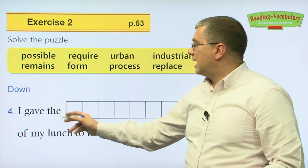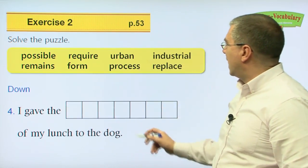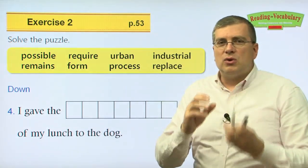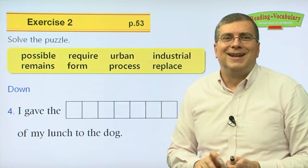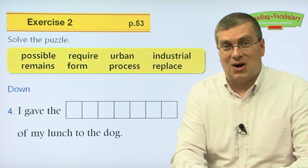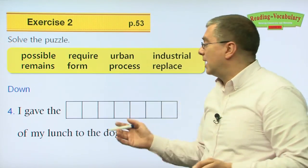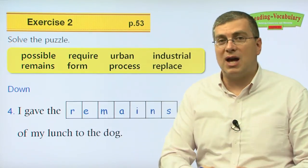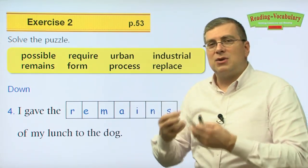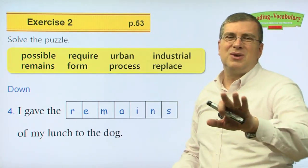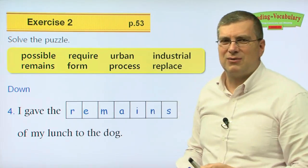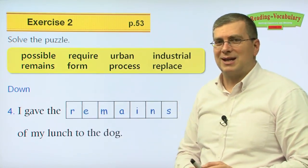Number four down: 'I gave the blank of my lunch to the dog.' Think about it — when you eat food and your dog looks at you, after you finish eating, maybe you don't eat everything, so you give what's left to your dog. What is left is the remains. You give the remains of your lunch — maybe a piece of bread, rice, or apple. So you give the remains of your lunch to your dog. But actually, don't do that, because your dog will beg you every time you eat.